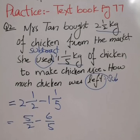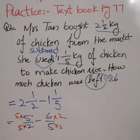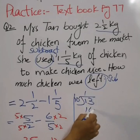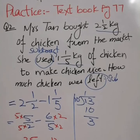We convert to improper fractions: 5 over 2 minus 6 over 5. We make both denominators the same by multiplying 2 with 5 and 5 with 2, giving us 25 over 10 minus 12 over 10. 25 minus 12 gives us 13 over 10. 13 over 10 is an improper fraction. We divide 13 by 10 and get 1 whole 3 over 10. So 1 whole 3 over 10 kilograms of chicken was left.